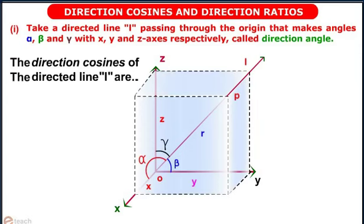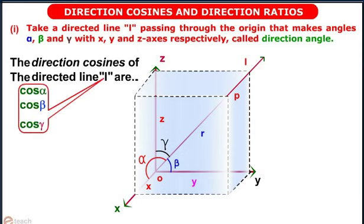The direction cosines of a line L are cos alpha, cos beta, and cos gamma.